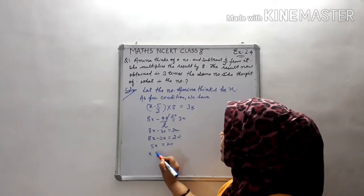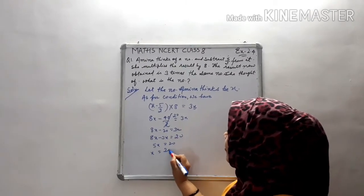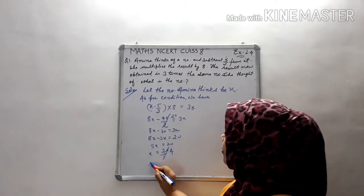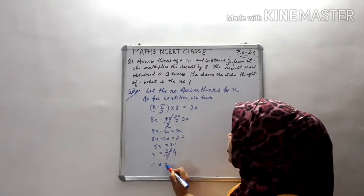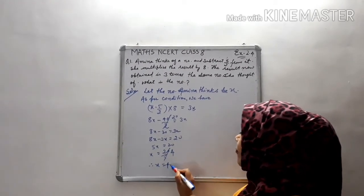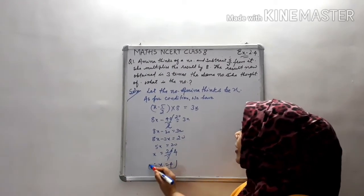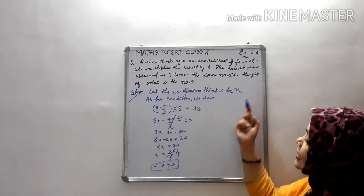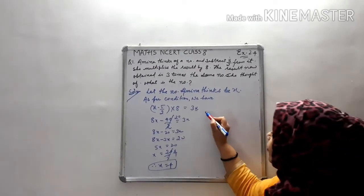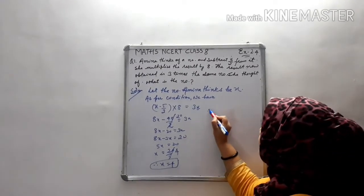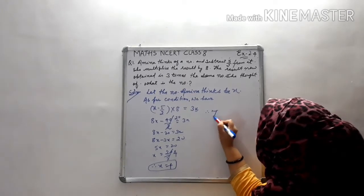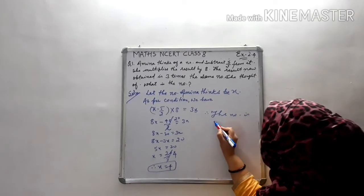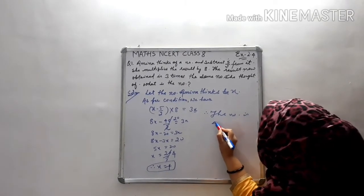So 5x is equal to 20. Therefore x is equal to 20 divided by 5, which gives us x equals 4. Therefore, the number is 4.